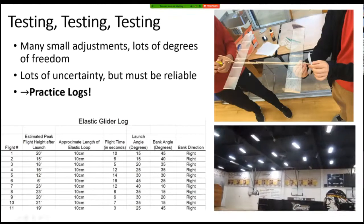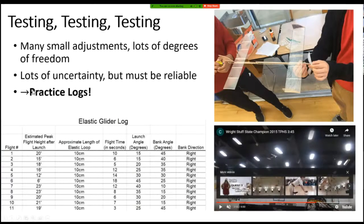There are so many small adjustments you can make, lots of degrees of freedom, so much uncertainty, but it has to be reliable when you get to the competition. What's worth its weight in gold is your certainty that this thing will work and deliver you a good result. That's why the event requires you to do a thing called a practice log.